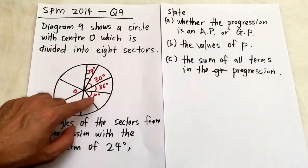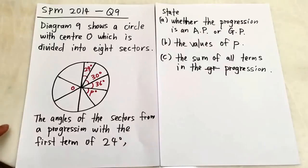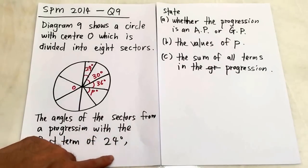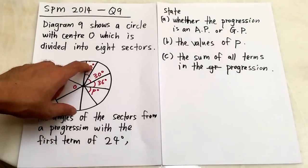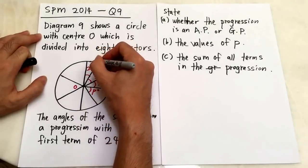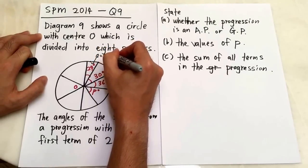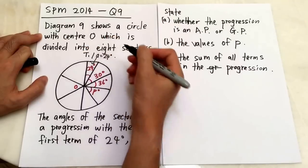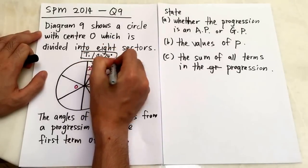So you have 1, 2, 3, 4, 5, 6, 7, 8 sectors. The angles of the sectors form a progression with the first term of 24 degrees. So this one is the first angle, so A equals to 24 — or sometimes students write it as term 1. That's the first information we have.